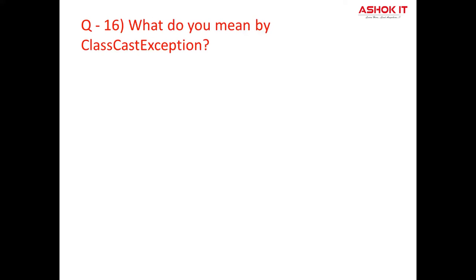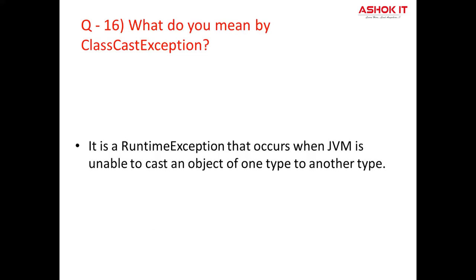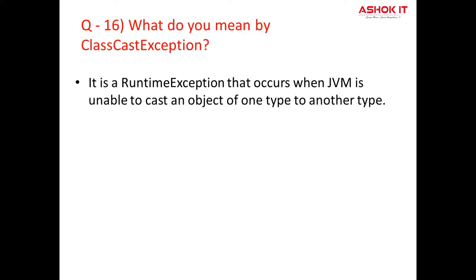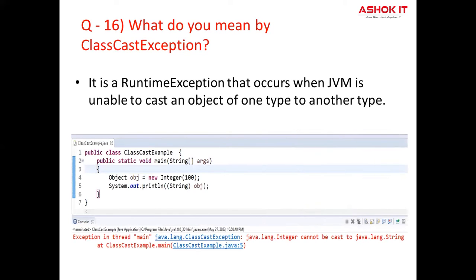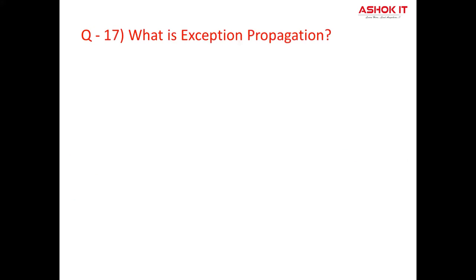Question number sixteen: What do you mean by ClassCastException? ClassCastException in Java is one of the unchecked exceptions that occurs when we try to convert one class type object into another class type object. You can observe this program code — here we are trying to convert this object to string. This ClassCastException is thrown to indicate that the code has attempted to cast an object to a subclass of which it is not an instance. You can observe this example.